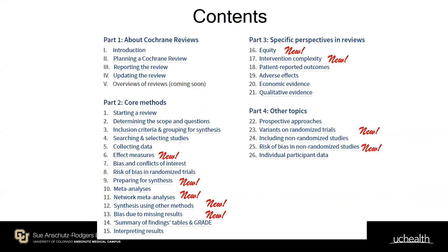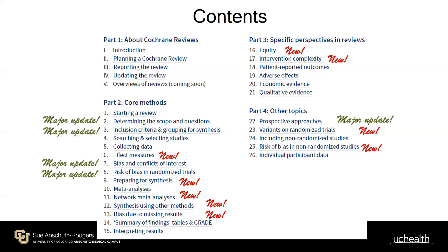New chapters in this version include: effect measures, network meta-analysis, synthesis using other methods when quantitative synthesis isn't possible, and bias due to missing results — formalizing the term rather than 'reporting bias' or 'publication bias.' There are also new chapters on risk of bias in non-randomized studies and complexity in systematic reviews. Beyond these nine new chapters, five others underwent substantial updates, including scope and questions, grouping studies for synthesis, and risk of bias for RCTs.